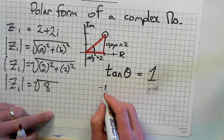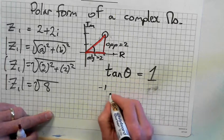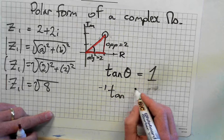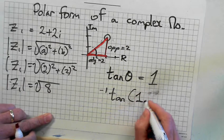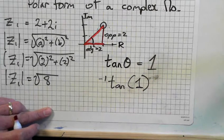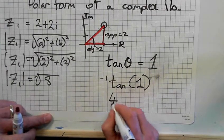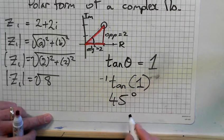Now you need to use your calculators. Inverse tan of 1. That gives us 45 degrees.